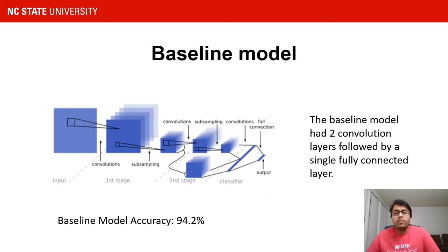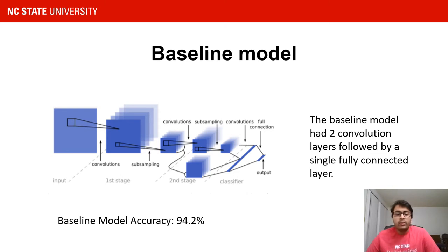We started off with a baseline model from one of our references. The baseline model did not involve any sort of pre-processing on the images and no data augmentation. It was a simple convolutional neural network having two convolution layers followed by a single fully connected layer. This baseline model gave us an accuracy of about 94.2%, and we are currently focusing on tuning the hyperparameters of this baseline model to improve the accuracy on the test set.